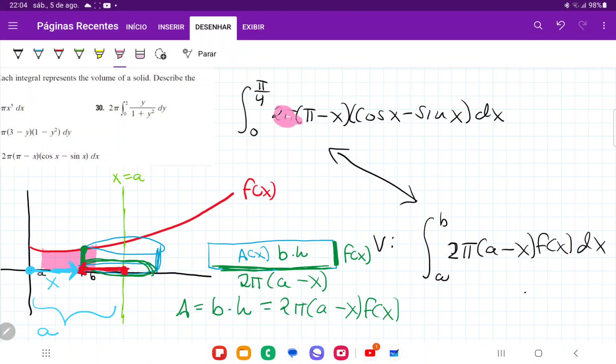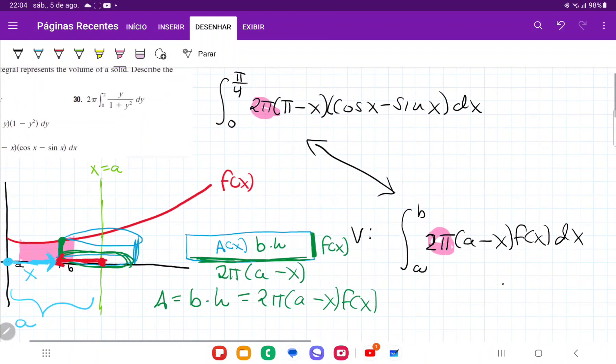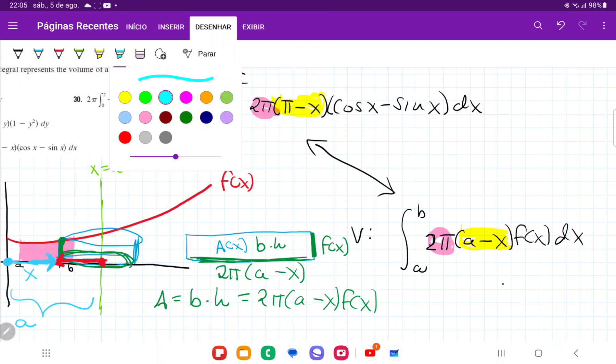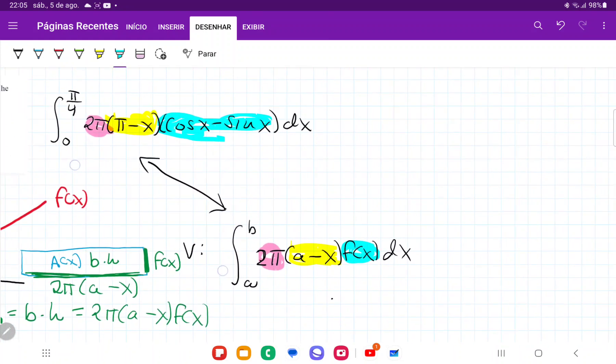So clearly, 2π matches with 2π. That's accounted for. And then we can see here that this (a - x), this is equivalent to this (π - x), right? It's just a number minus a variable. And then lastly, we're going to have that this f(x), this is going to be equivalent to my cosine x minus sine x.